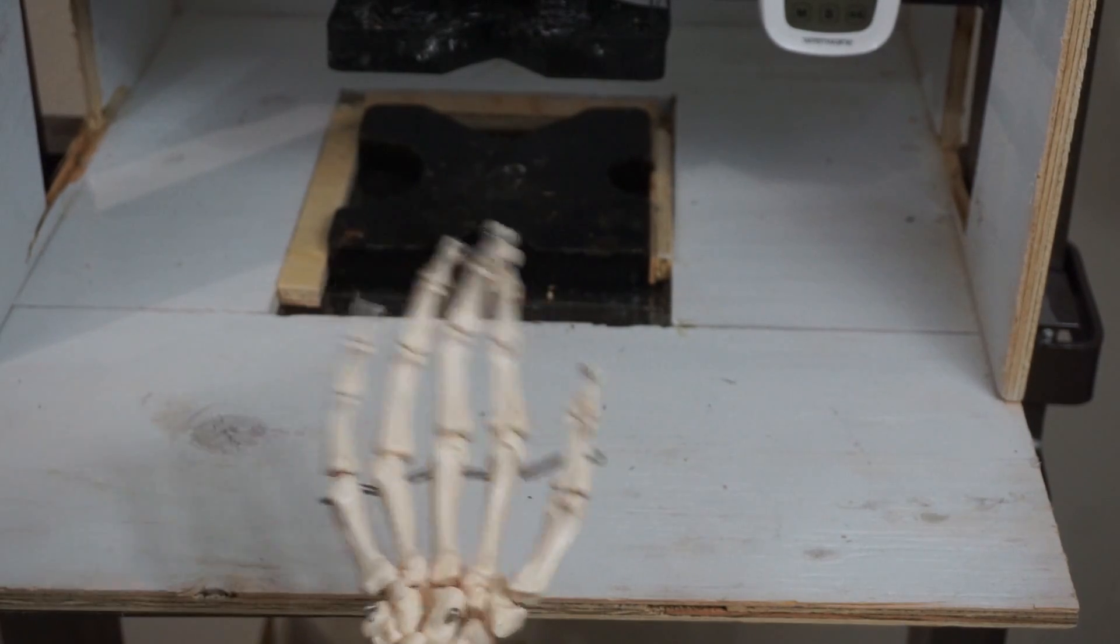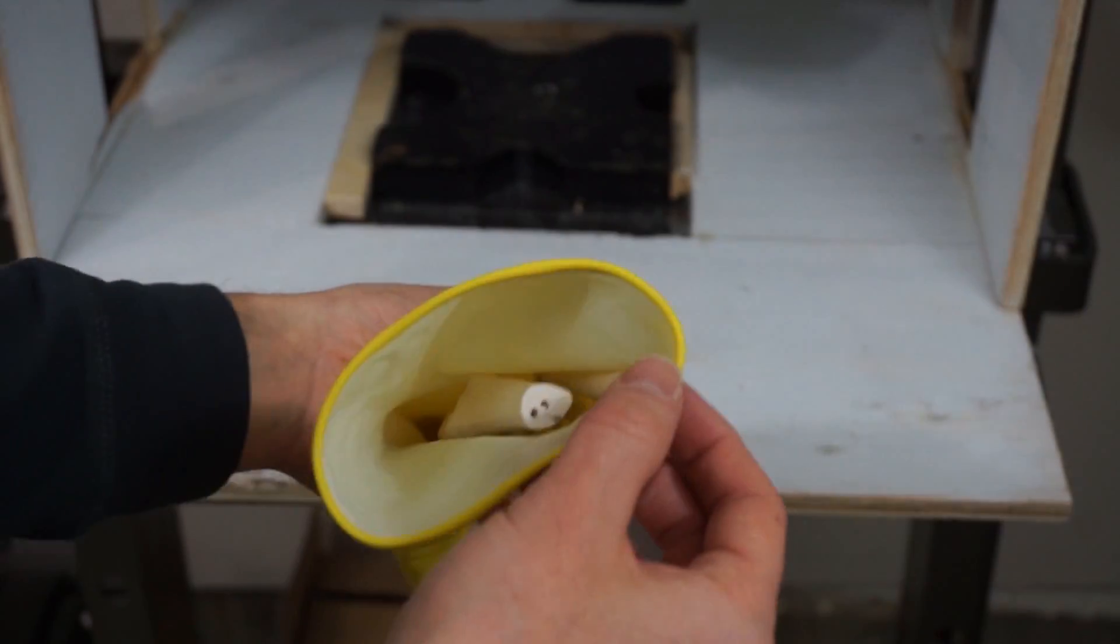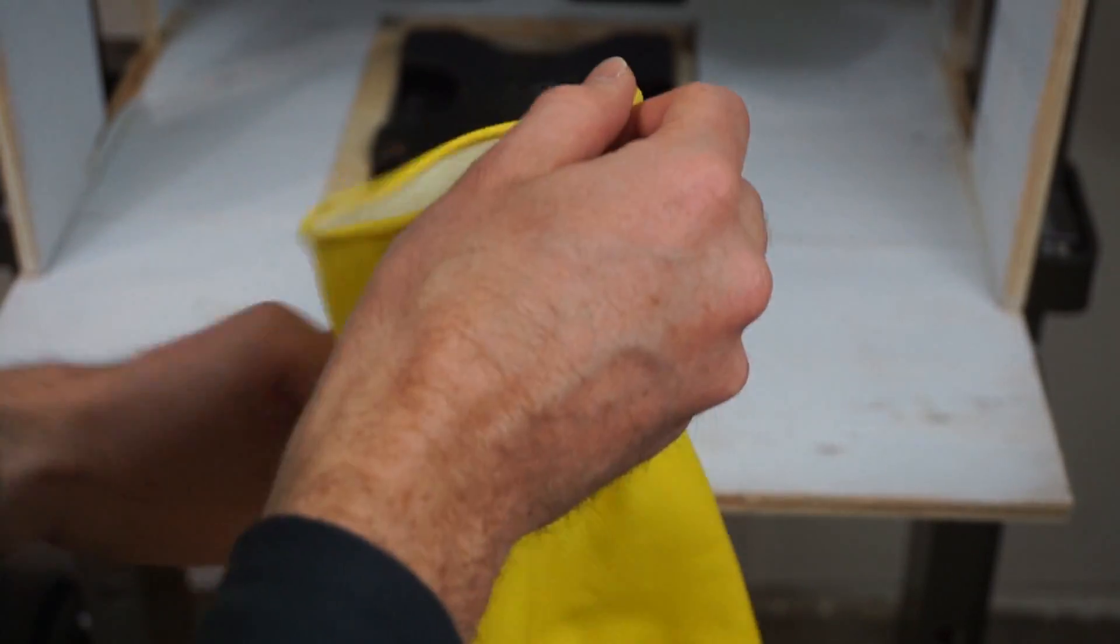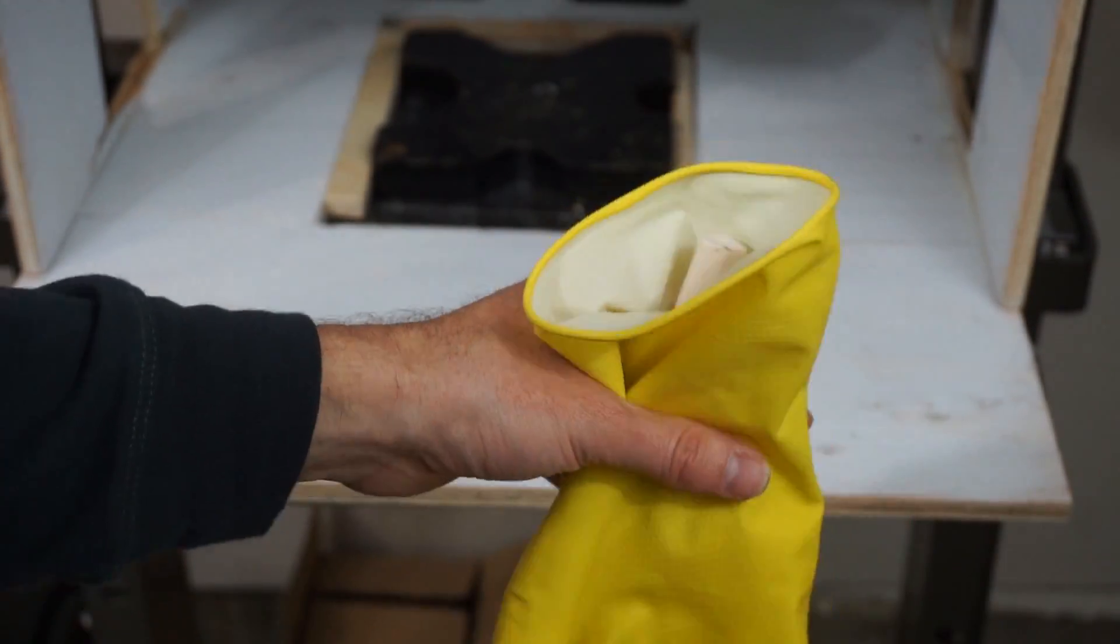So you don't want to get your hand crushed. Okay, so what I'm doing is I have my bone hand in this glove, and I'm going to just pour in some ballistic gel and let it harden.